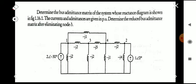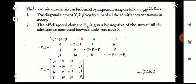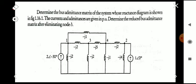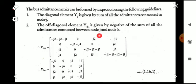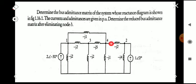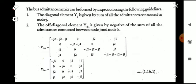For the off-diagonal element Y12, we find the common element between nodes 1 and 2. There is no direct connection, so Y12 = 0. For Y13, between nodes 1 and 3 there is -j2, so Y13 = -(-j2) = j2. Between nodes 1 and 4 there is -j1, so Y14 = -(-j1) = j1. Using these rules, we can find each and every element of the matrix.